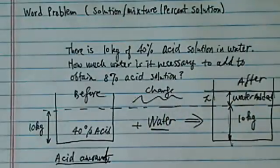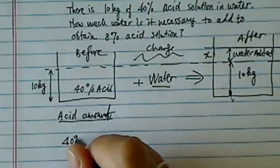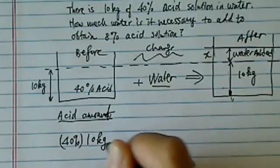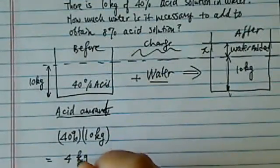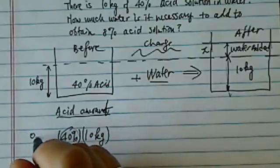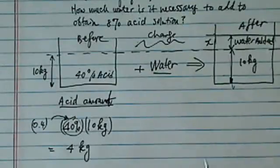So acid amount at the beginning of the solution is 40% of 10 kilograms, which is really just 4 kilograms, because 40% is really 0.4, 0.4 times 10 is 4 kilograms.